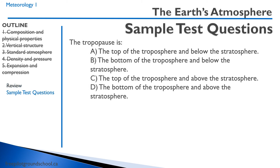Let's work our way through a few sample test questions. The tropopause is: A, the top of the troposphere and below the stratosphere — that's correct. B, the bottom of the troposphere and below the stratosphere — no, that makes no sense because the Earth is at the bottom of the troposphere. C, the top of the troposphere and above the stratosphere — no, because the tropopause is between the troposphere and stratosphere, not above the stratosphere. D, the bottom of the troposphere and above the stratosphere — also not correct. The correct answer is A.